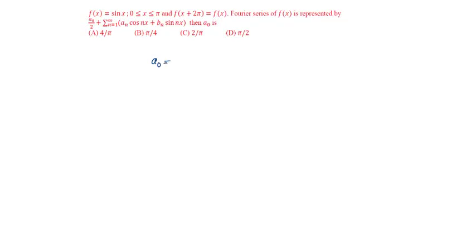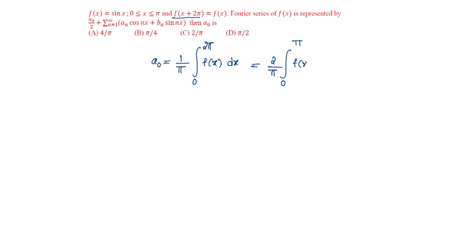A0 will be equal to 1 by pi integral 0 to 2 pi f of x dx. Since f of x is periodic about 2 pi, this can be written as 2 by pi integral 0 to pi f of x dx, that is equal to 2 by pi integration from 0 to pi sin x dx.